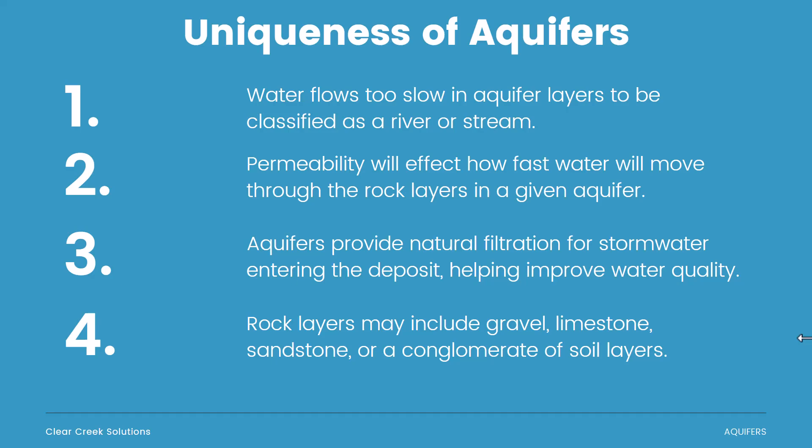Let's discuss the uniqueness of aquifers. Water flows too slowly in aquifer layers to be classified as a river or stream with fast-moving water. Permeability affects how fast water moves through the rock layers in a given aquifer. Aquifers also provide natural filtration for stormwater entering the deposit, helping improve water quality — the natural environment does a good job of removing pollutants and toxins from the water as it reaches the well. Rock layers may include gravel, limestone, sandstone, or a conglomerate of different soil layers.